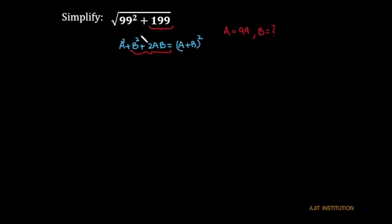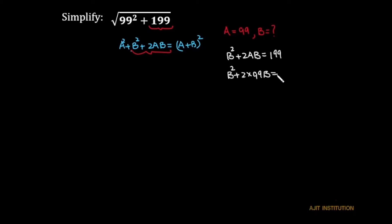By equating, this whole expression equals 199, so b squared plus 2ab equals 199. Putting in the value of a: b squared plus 2 times 99 times b equals 199, which gives us b squared plus 198b equals 199.